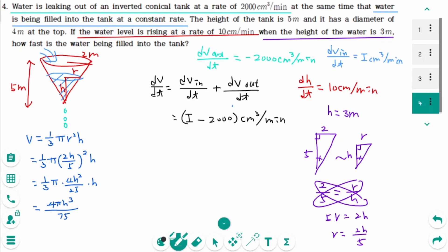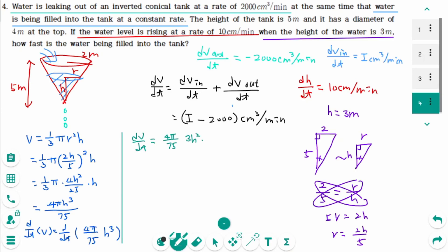Differentiating implicitly with respect to t: dV/dt equals (4π/75) times 3H² times dH/dt.